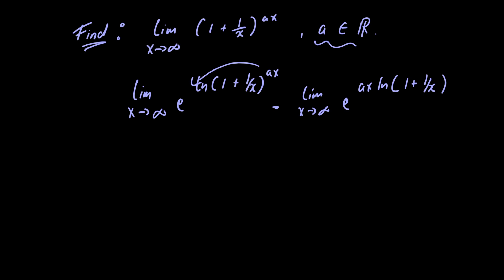Let's just go a step further and rewrite the limit as the limit as x approaches infinity of e raised to the natural logarithm of 1 plus 1 over x divided by 1 over a times x. These two are the same because if we were to just multiply by ax here and ax here we would have what we have right here.